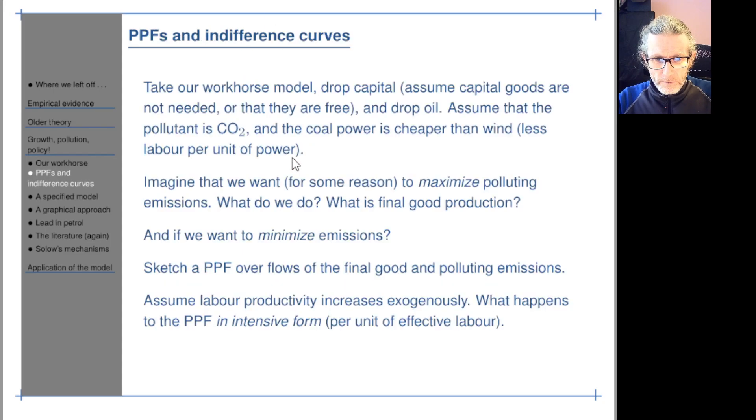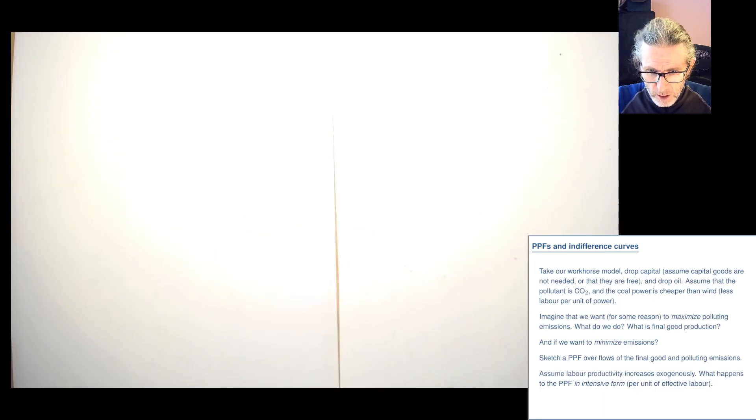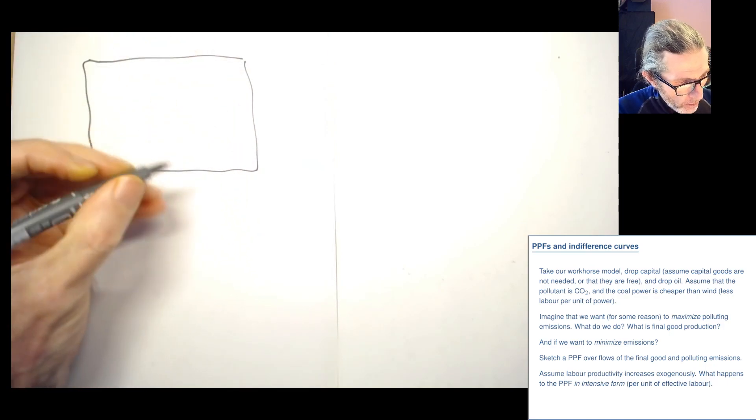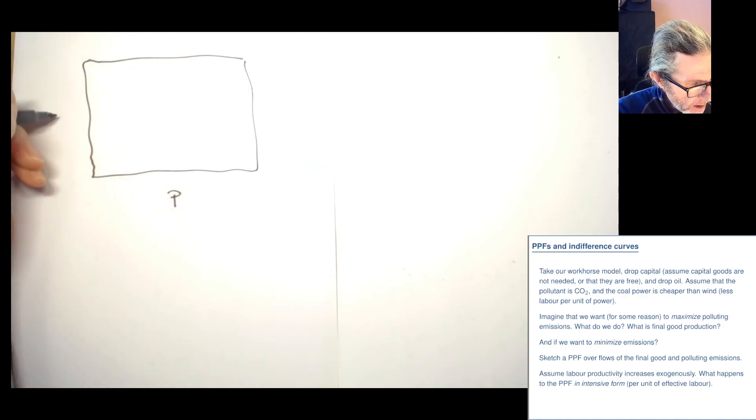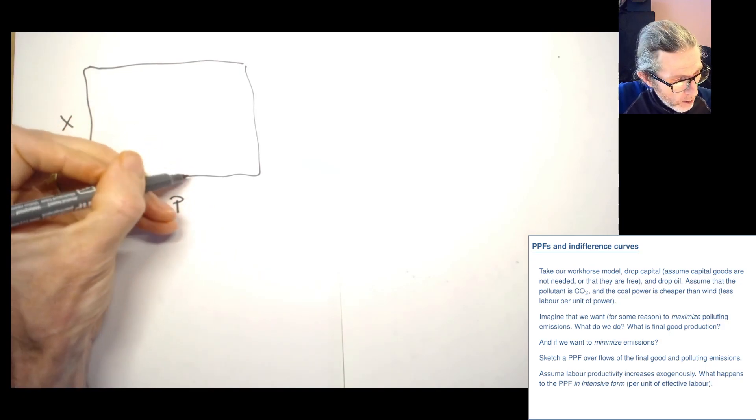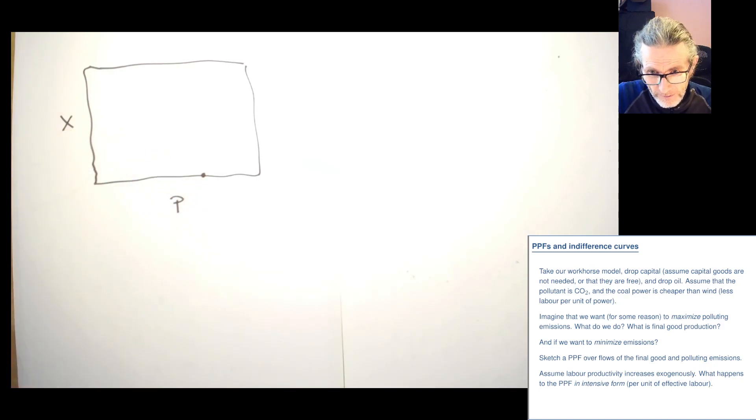So if we try to plot a PPF, let me just switch over. If we're trying to plot a production possibility frontier over the final good and polluting emissions, we've just got one point on it. So if this is pollution, and this is the final good, I can't remember what notation I'm going to be using shortly, but let's call it x.